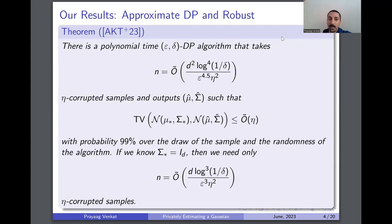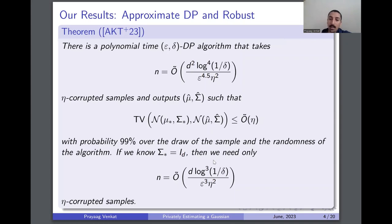Our first main theorem applies to the setting of approximate differential privacy and robustness. We show there exists a polynomial time approximate DP algorithm which takes n roughly quadratic in d many samples and learns the unknown Gaussian to within TV distance roughly eta, with high probability. Moreover, if the unknown covariance is known to be the identity, this sample complexity improves to roughly linear in d. The sample complexity and error guarantees here are optimal even without privacy and robustness constraints, and the TV distance guarantee is information-theoretically optimal in the strong contamination model.